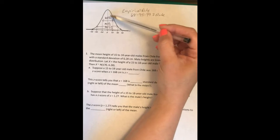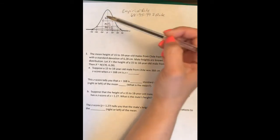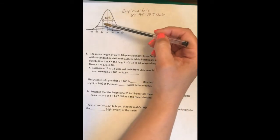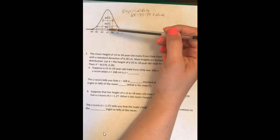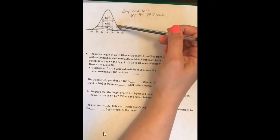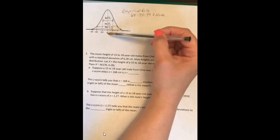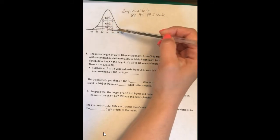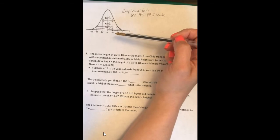And when we look at this normal curve, what I want you to understand is that 68% lie within one standard deviation of the mean, 95% lies within two standard deviations of the mean, and 99.7% is within three standard deviations of the mean.